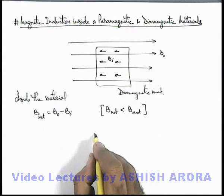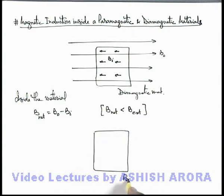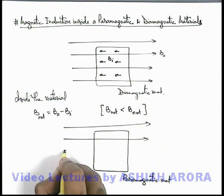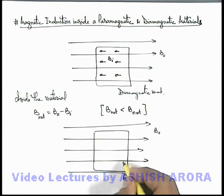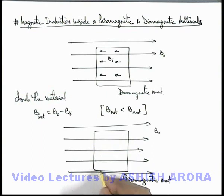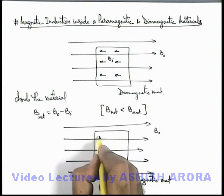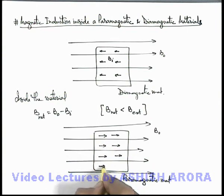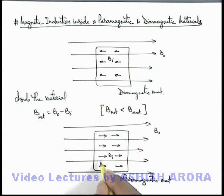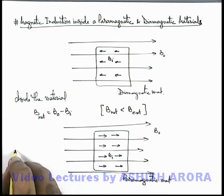Similarly, if we talk about a paramagnetic material and we apply an external field B₀ onto it — as we studied in the previous section — the existing dipoles inside the material will align themselves in the direction of the external magnetic field. So the induced magnetic induction due to this alignment of dipoles will be in the same direction as the external magnetic field.